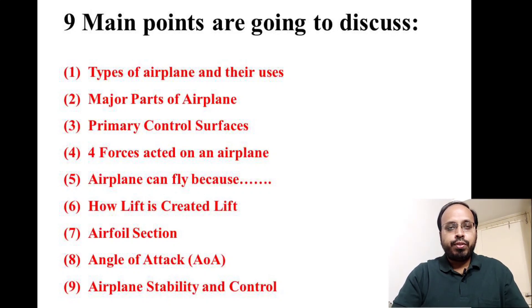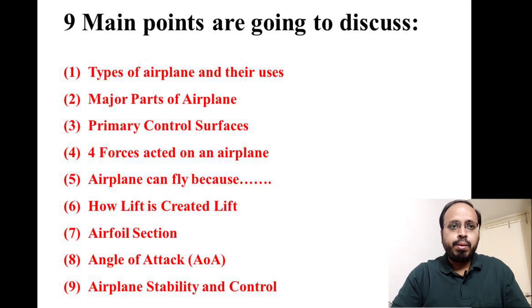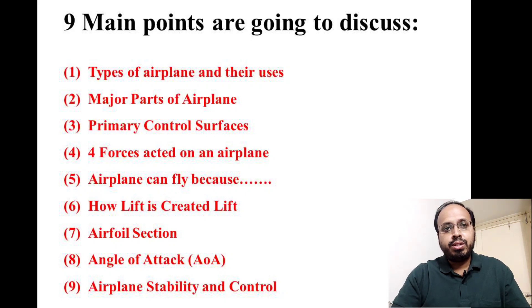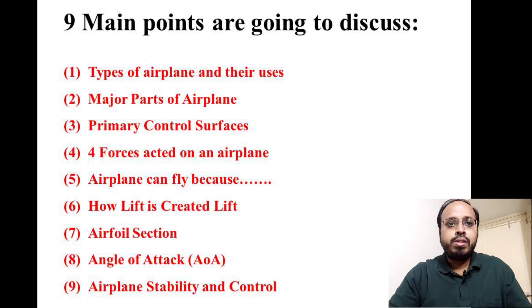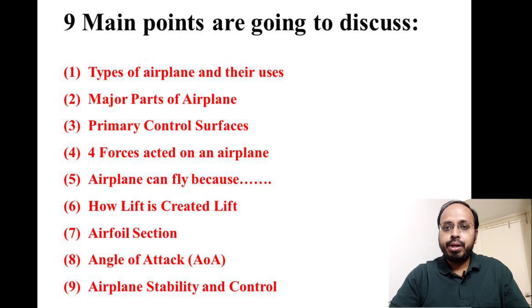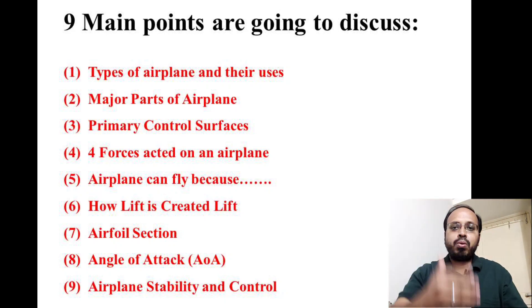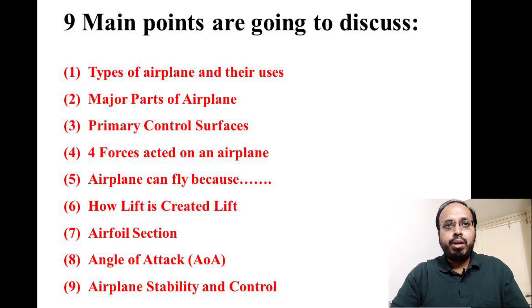In this topic, basic aircraft, we are going to discuss nine main points. The first point is types of airplanes and their uses. Second: major parts of airplane. Third: primary control surfaces. Fourth: four forces acting on an airplane. Fifth: airplane can fly because of... Sixth: how lift is created. Seventh: airfoil section. Eighth: angle of attack. And ninth: airplane stability and control.